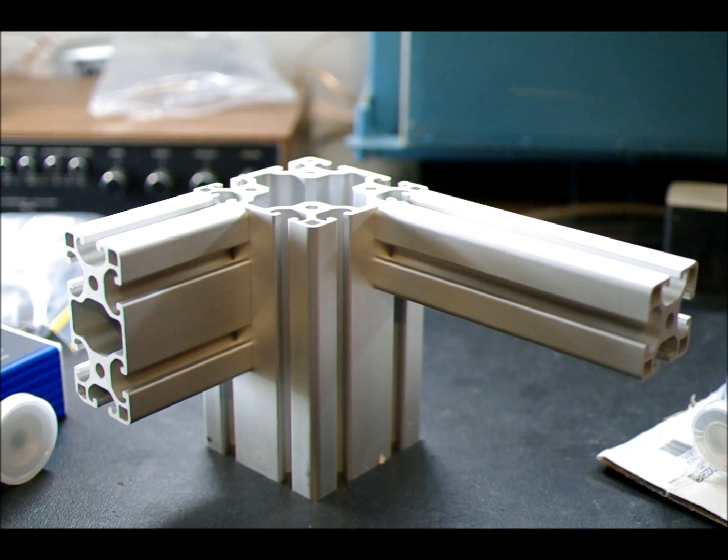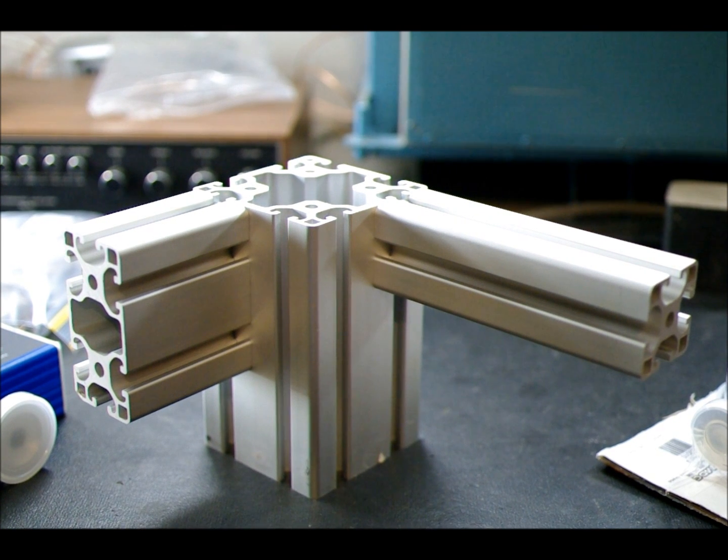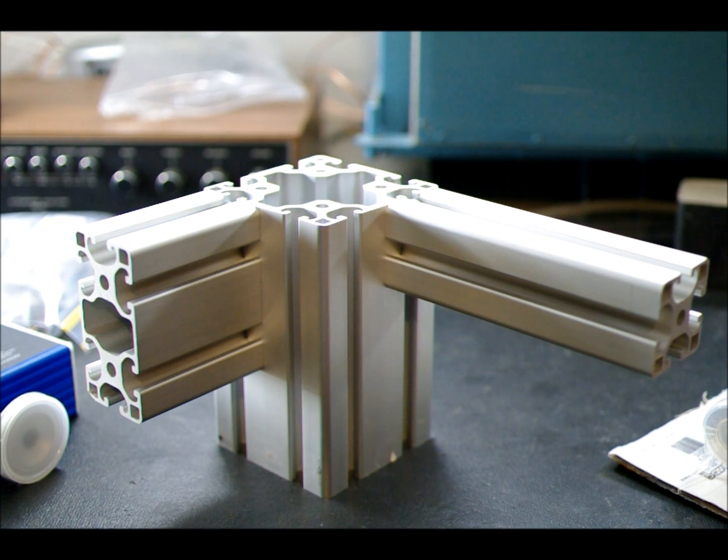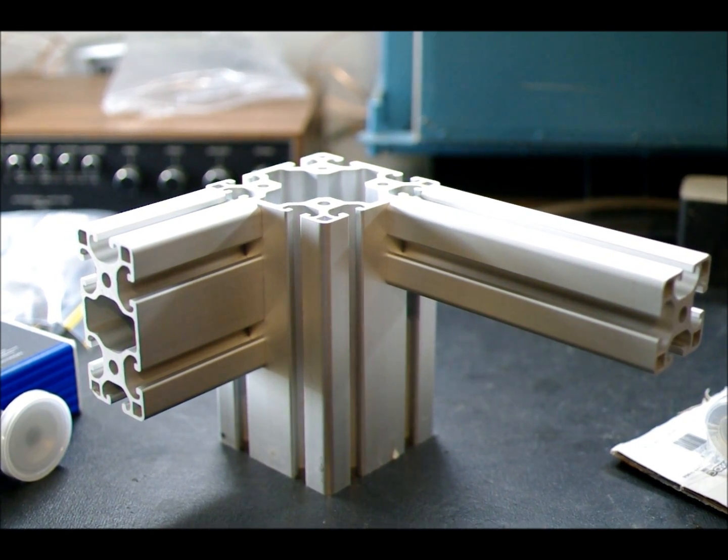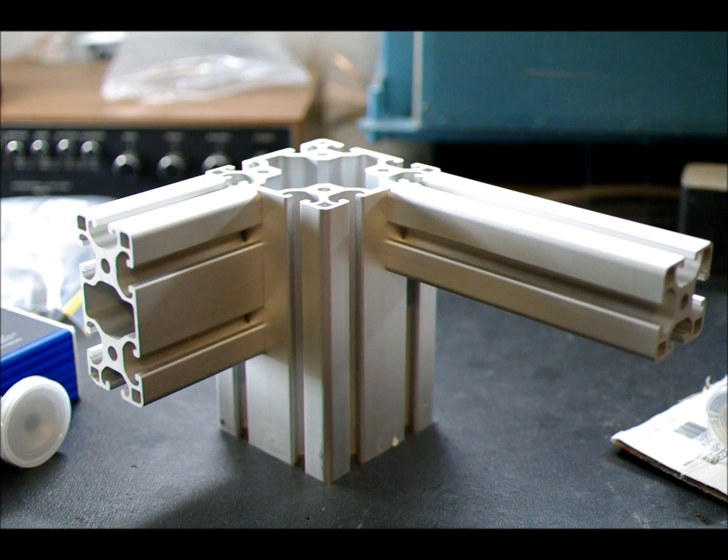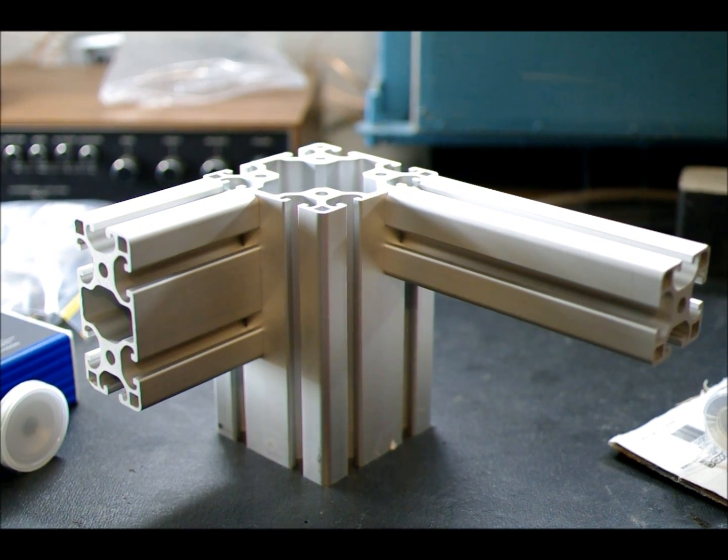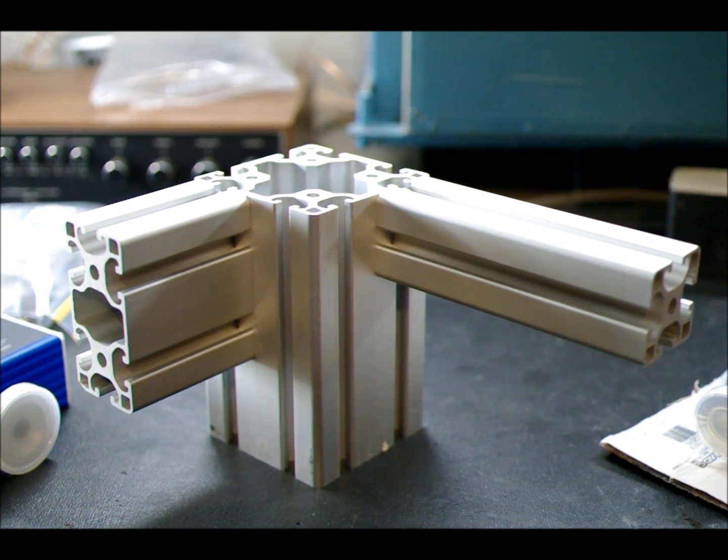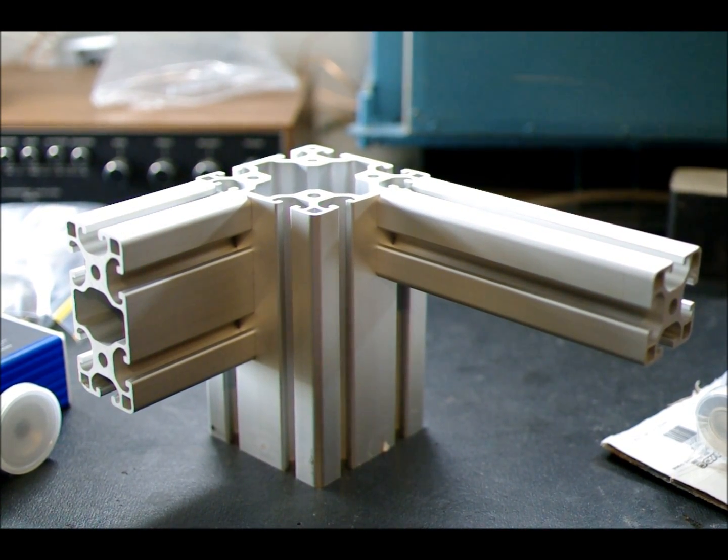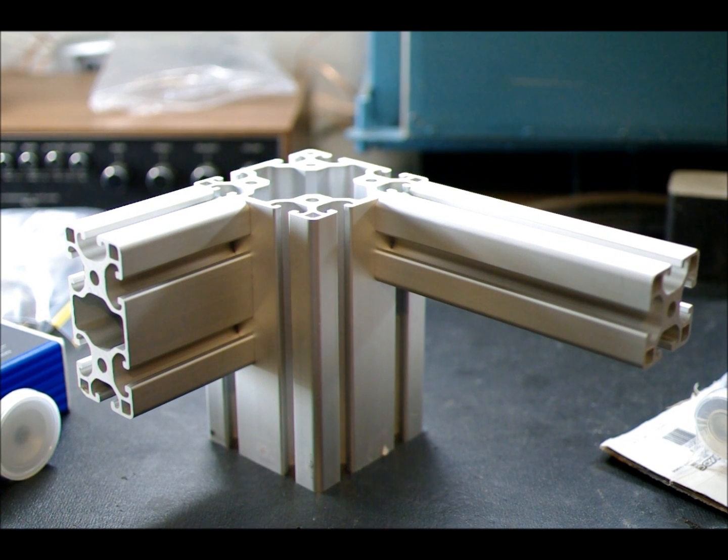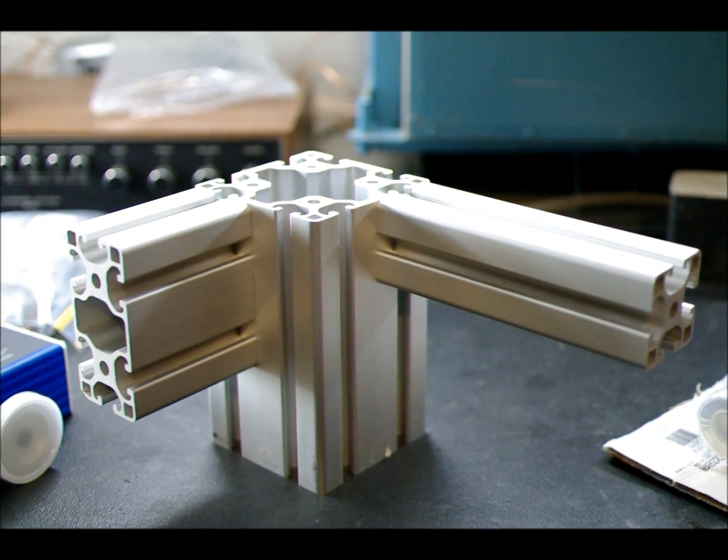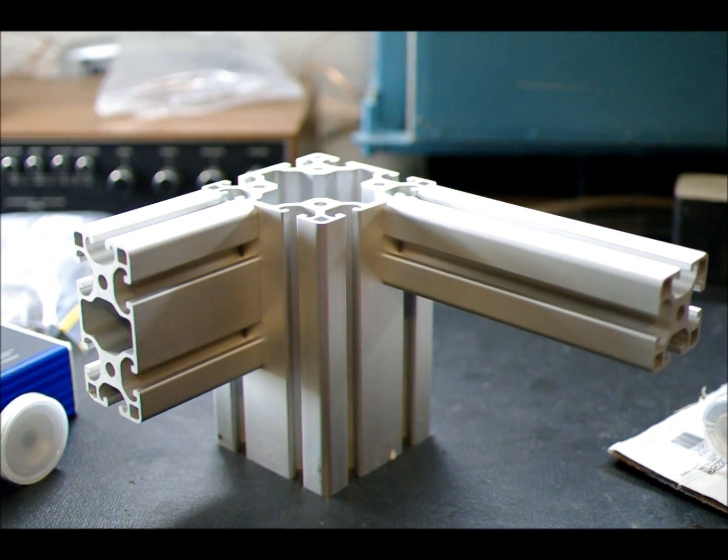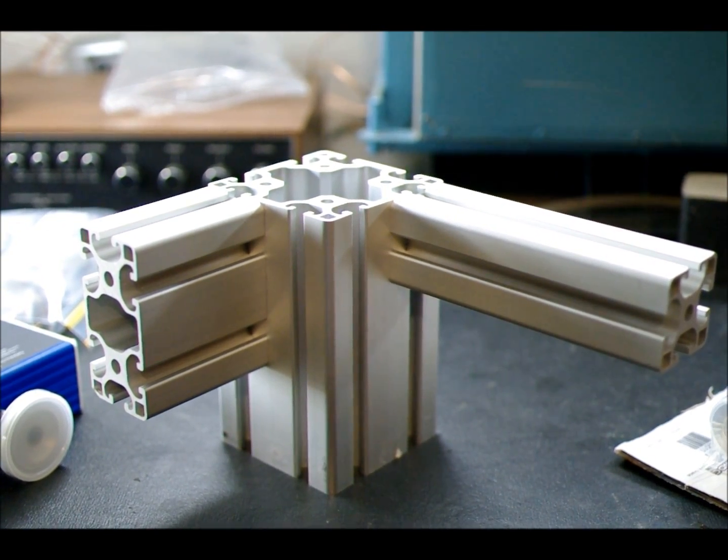The frame that will hold the vacuum system will be made of this aluminum extrusion. The legs will be made of 80 by 80, which you can see in the middle. The rest of the frame will be 80 by 40, on the left. The piece on the right is 40 by 40, which we probably won't use at this stage, but we might do some add-ons to the frame later.